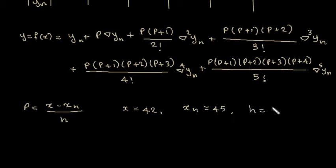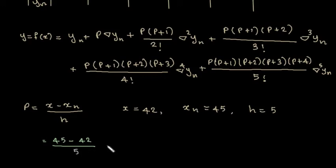So the difference is 5. Next, we have to substitute the values. So, (42 minus 45) divided by 5, which is equal to — here is a correction — 42 minus 45 divided by 5 is minus 0.6.